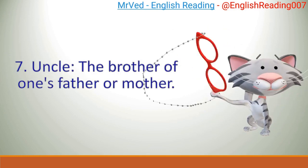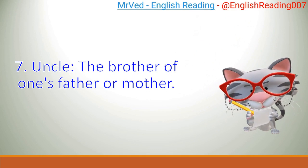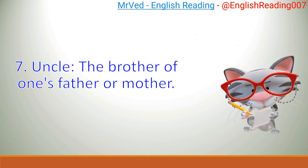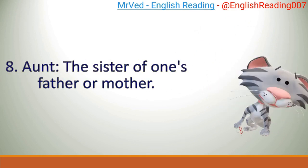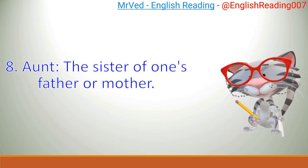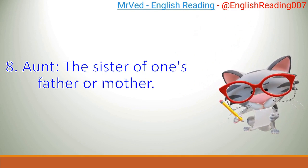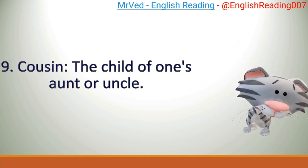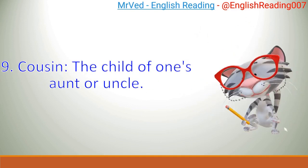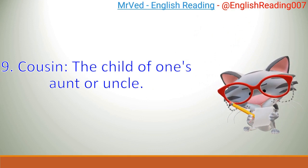7. Uncle — the brother of one's father or mother. 8. Aunt — the sister of one's father or mother. 9. Cousin — the child of one's aunt or uncle.